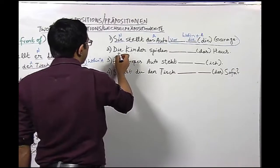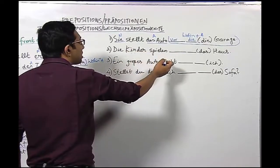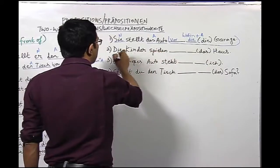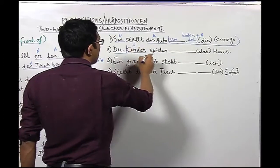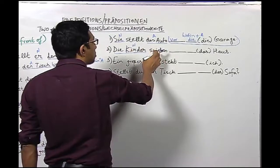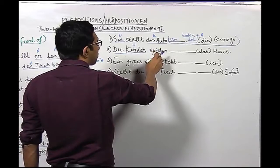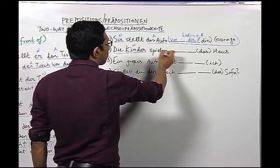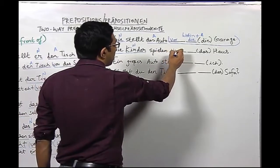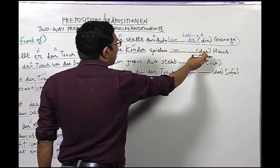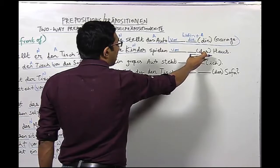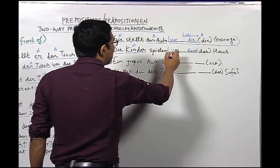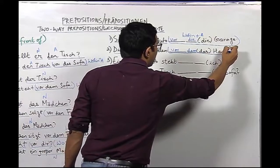Sentence number two: Die Kinder spielen vor dem Haus. The nominative is 'die Kinder'. Since 'spielen' is a dative verb in this context — no movement of the noun is happening — we use 'vor' in the dative form. The article 'das' in dative becomes 'dem', so we have 'vor dem Haus'. With this we get the answer to the wo question in dative.